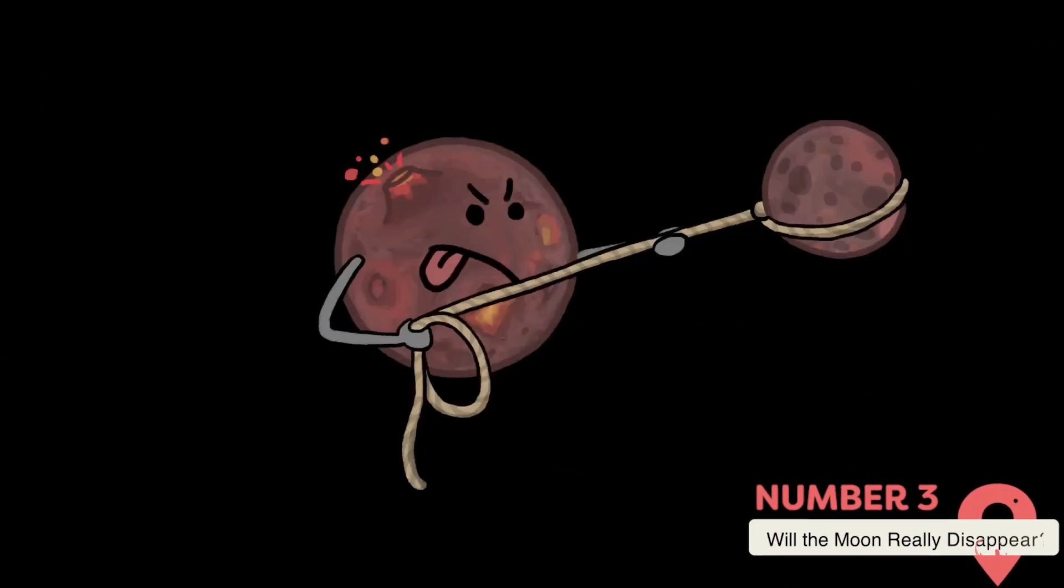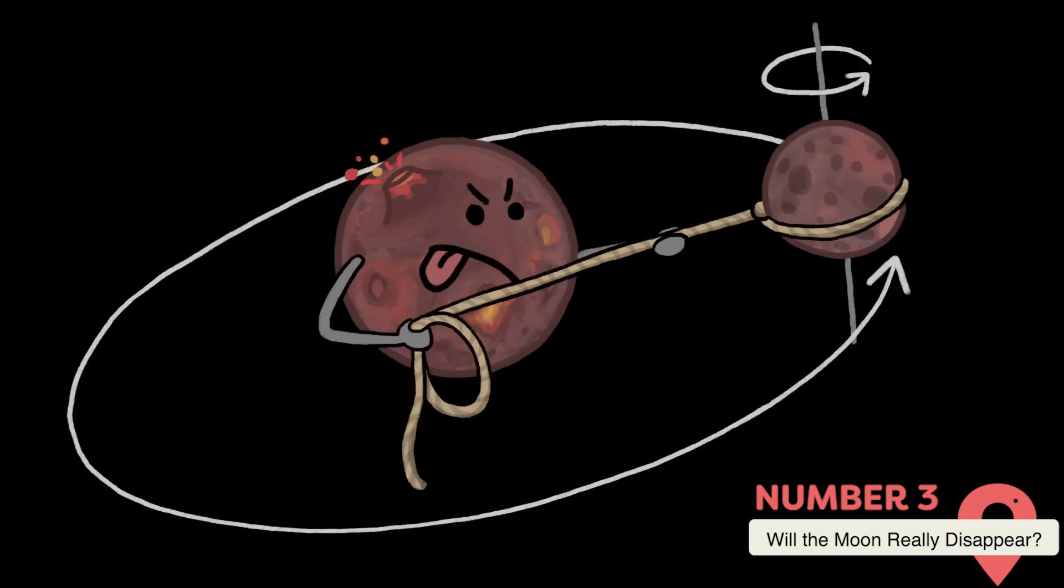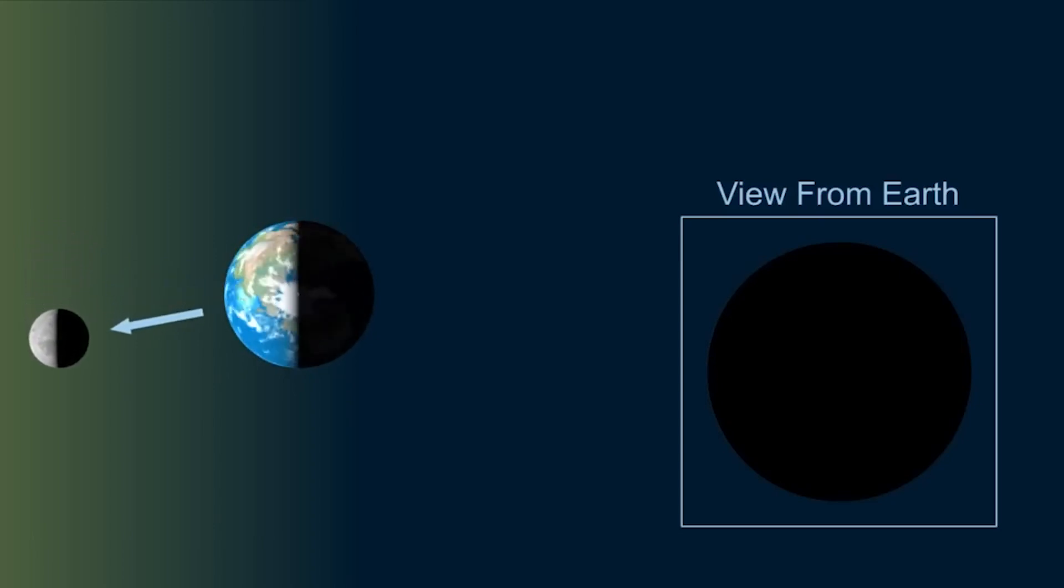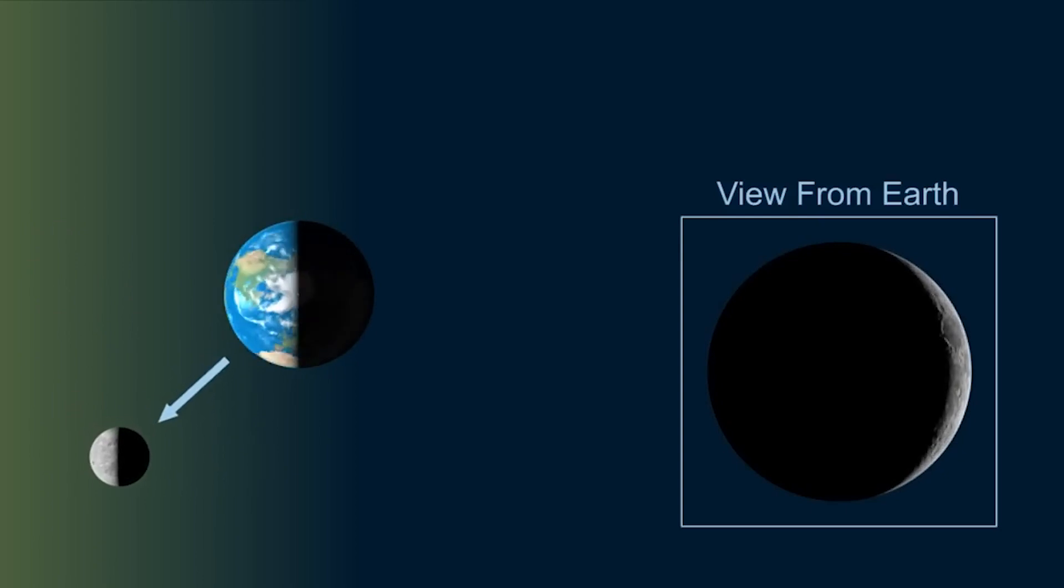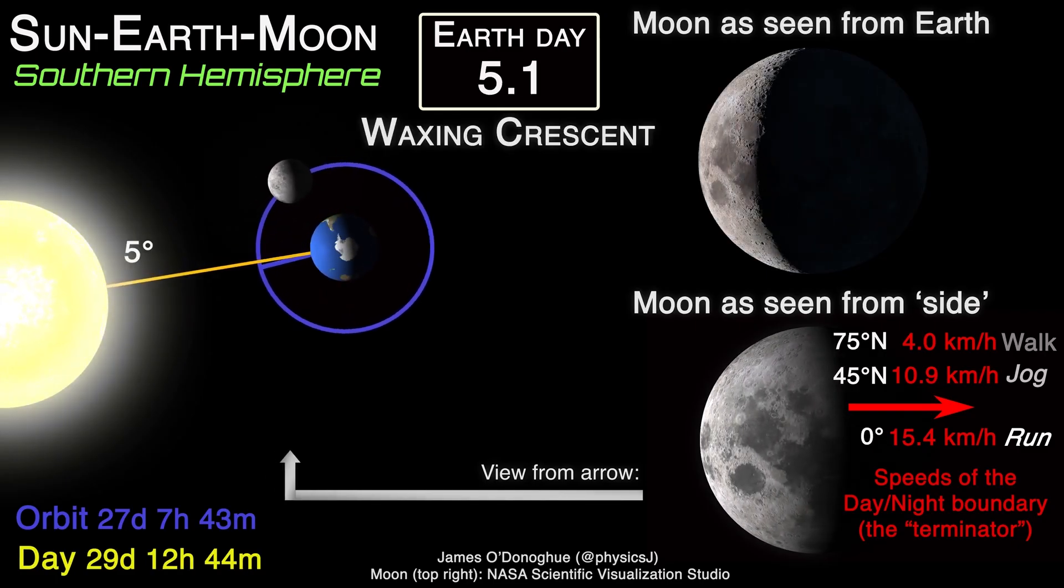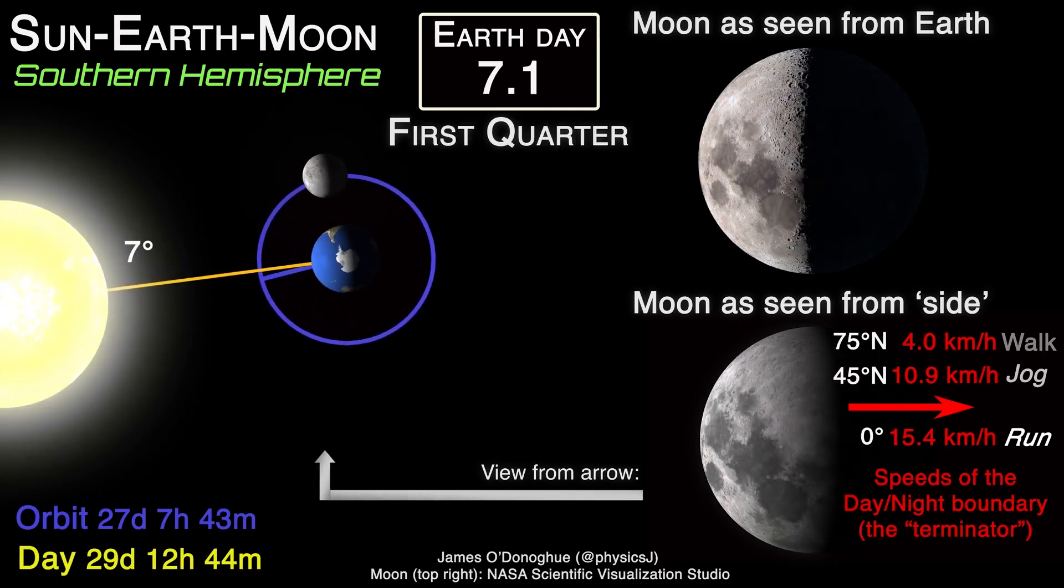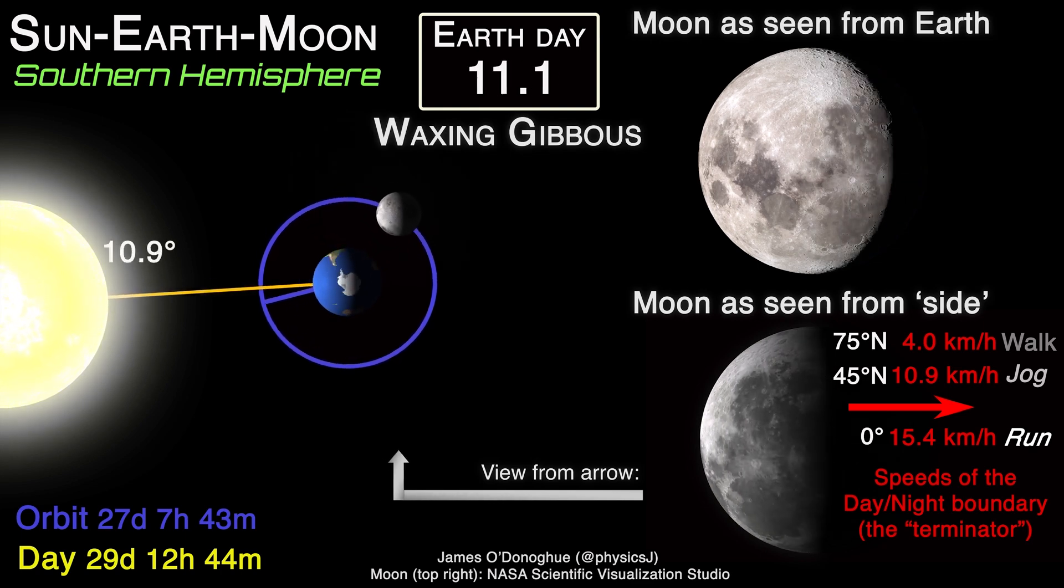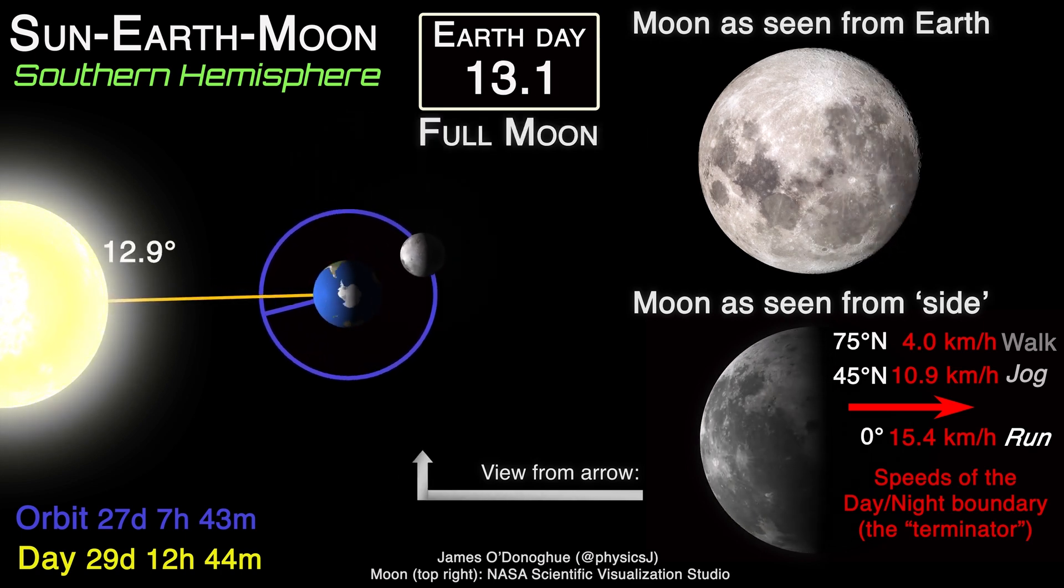Will the Moon really disappear? Despite the alarming notion of the Moon drifting away, there's no need to panic about Earth losing its nightlight anytime soon. At the current rate of recession, it would take over 50 billion years for the Moon to double its distance from Earth. Our Sun will likely exhaust its fuel and expand into a red giant star in about 5-7 billion years, long before any drastic changes to the Earth-Moon system.